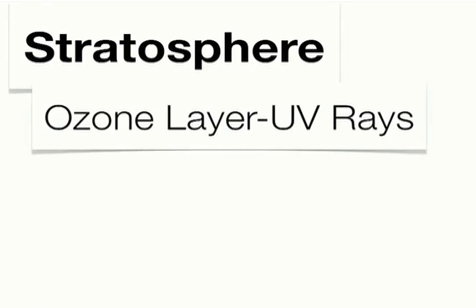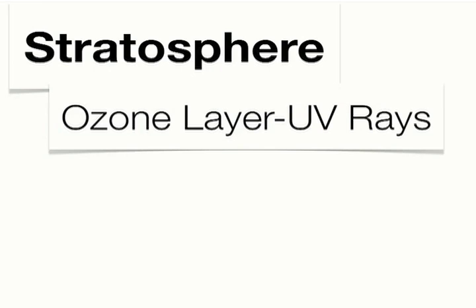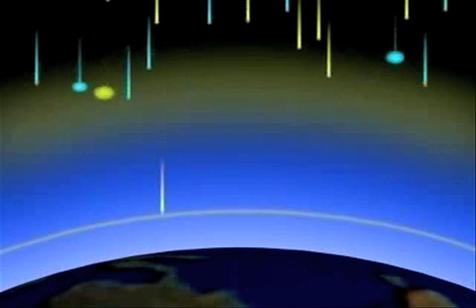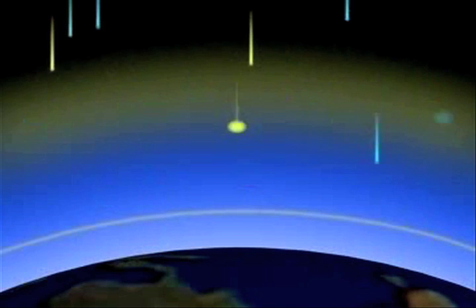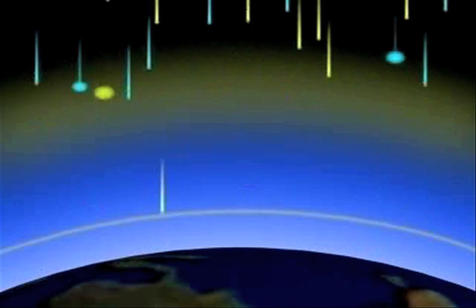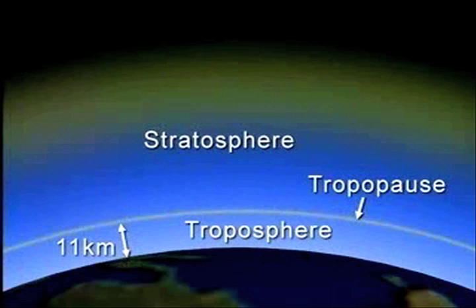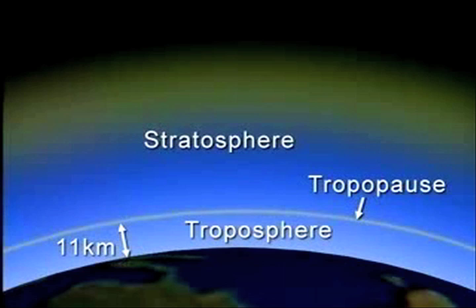The reason this inversion exists is due to ozone. While ozone is hazardous at the surface, it's actually important in the upper layers. Ozone absorbs energetic ultraviolet solar energy, and some of this absorbed energy warms the stratosphere — this explains the inversion. So if ozone weren't present, this layer would be colder with height. The level where maximum ozone occurs is observed near 15 miles.